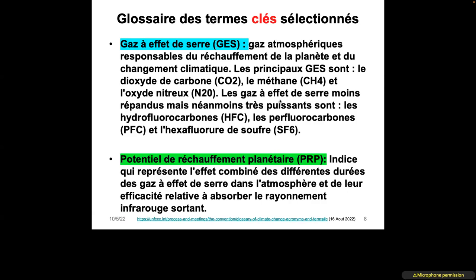Another term to pay attention to is the global warming potential (GWP). It is an indicator that represents the effect of different greenhouse gases, their duration in the atmosphere, and how these gases can absorb infrared radiation in the air.